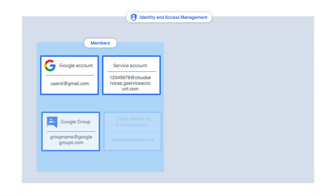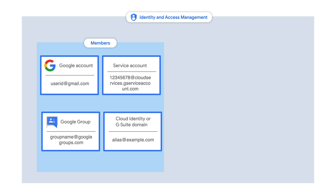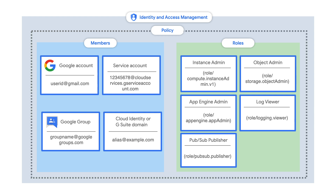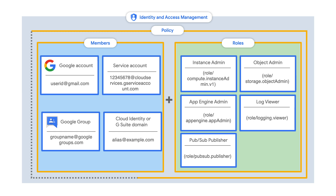A member is who or what you want to give permission to. A role is a collection of specific permissions to determine what operations can be performed on a resource. And a policy binds one or more members to a particular role. Once you have a policy, you'll be able to clearly define who can do what on what resources. As a simple equation: members plus roles equals policy.